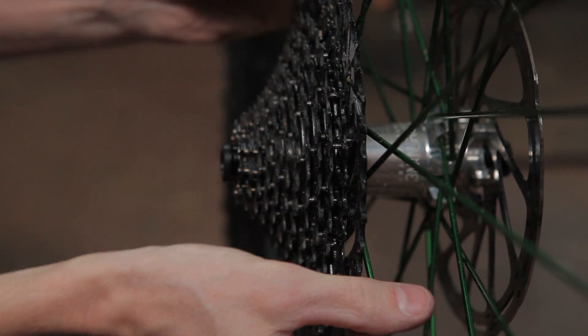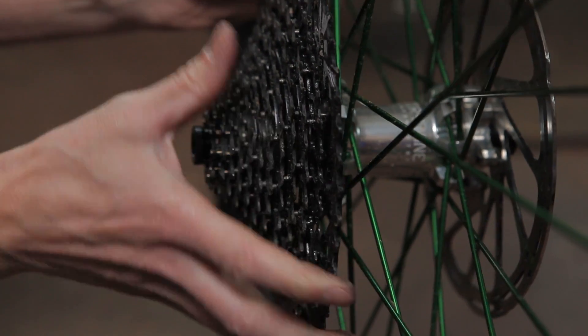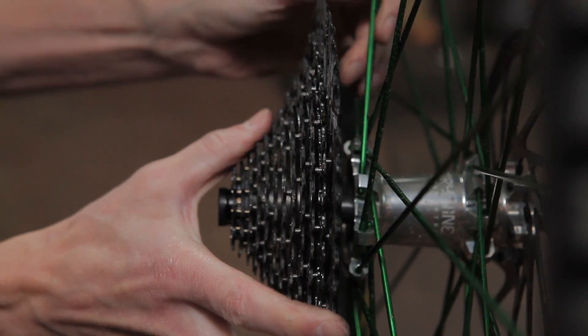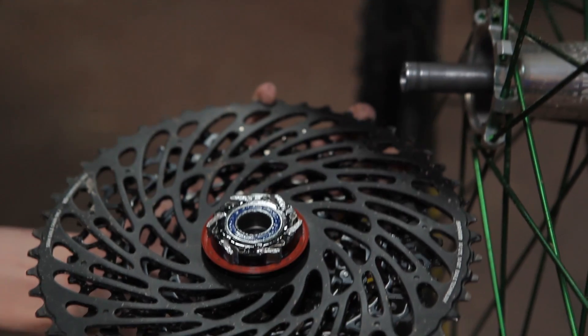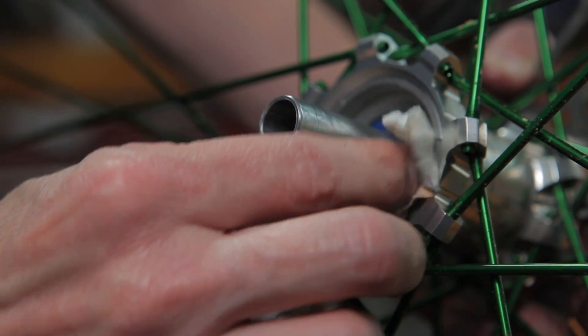Simply grab the outside edges of the cassette and pull firmly straight off the axle. Wipe off any excess dirt and grease you find in the drive ring area.